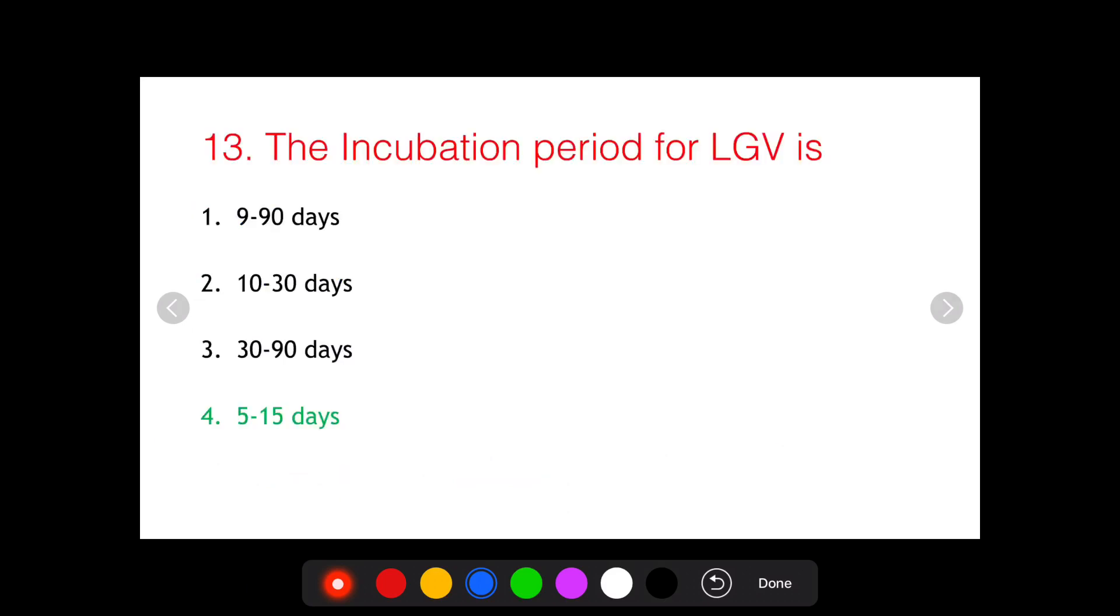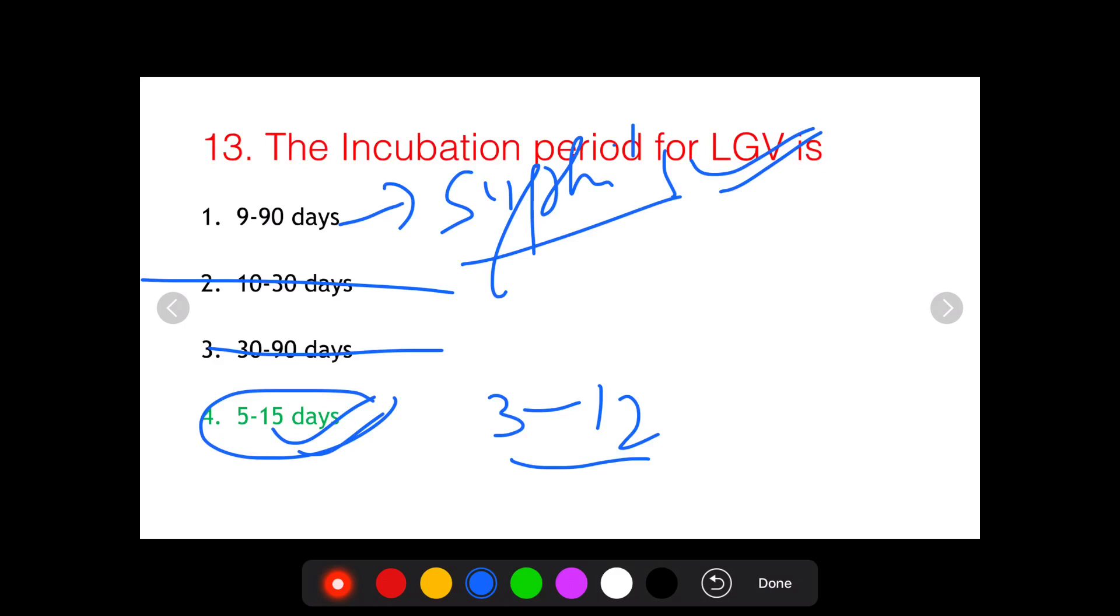The correct answer for this question becomes 5 to 15 days, as the incubation period for LGV is described as 3 to 12 days. So 5 to 15 days is the closest option amongst these given options. As far as other options are concerned, 9 to 90 days is the incubation period for syphilis, and 10 to 30 days and 30 to 90 days are distractors and can be ruled out.